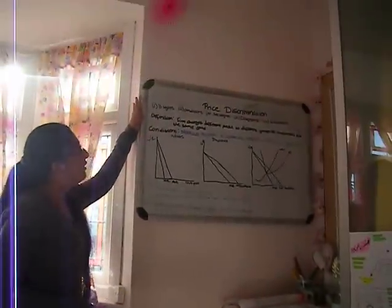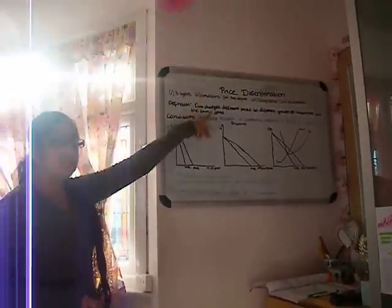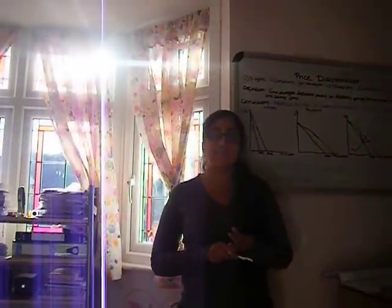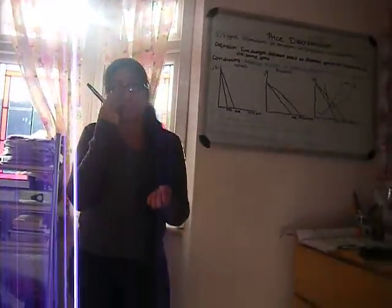So I've talked to you about the three types of price discrimination. Now I'm going to go into the conditions. There are four conditions you have to satisfy in order for price discrimination to take place.